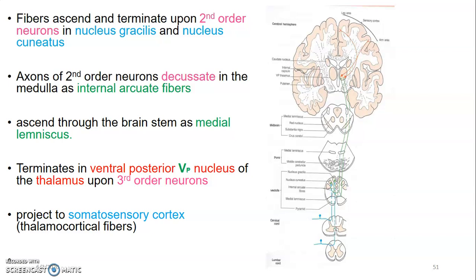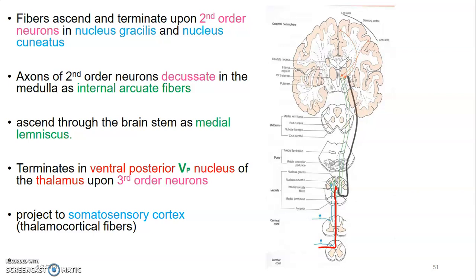Looking at the diagram, the red represents the first-order neuron. Sensory information enters from the dorsal root ganglion through the dorsal horn, then ascends through the spinal cord to nucleus gracilis or cuneatus depending on where it came from. After synapsing with the second-order neuron there, the second-order neuron immediately crosses the midline — decussating — then ascends to the ventral posterior nucleus of the thalamus.